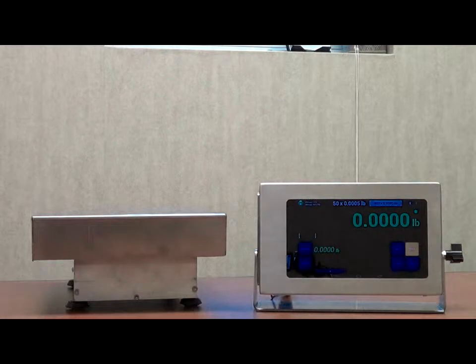This particular scale is a surface acoustic wave scale, or in short, SAW scale. This technology can show one part in 100,000. This is a 50 pound scale, but it can show up to four decimals due to its resolution.